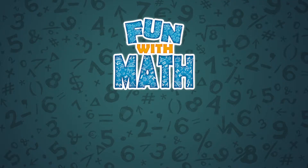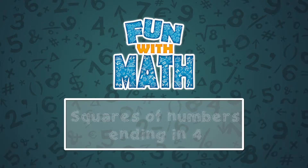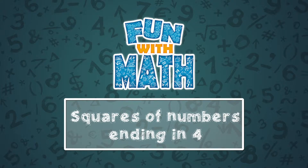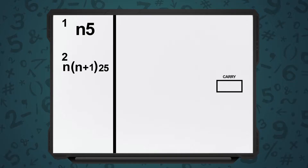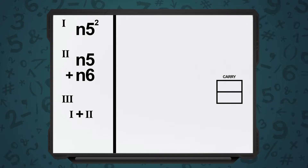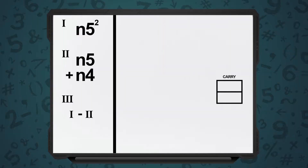Hi! Welcome to the series Maths is Easy, Maths is Fun. In this video, we'll learn to take squares of numbers ending with the digit 4. We've seen the shortcut for squares of numbers ending with digit 5, and we've seen the shortcut for squares of numbers ending in digit 6. Squares of numbers ending with the digit 4 is quite similar to squares of numbers ending with the digit 6 — there's a small variation.